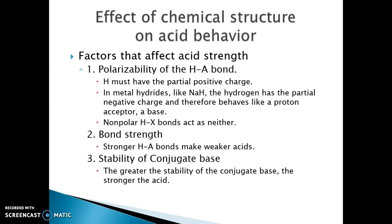Number one, you've got the polarizability of the HA bond. The strong halogen acids — HCl, HBr, and HI — were strong, but HF was weak. Why was HF weak? Because HF is holding on to the hydrogen so tightly.